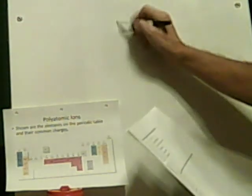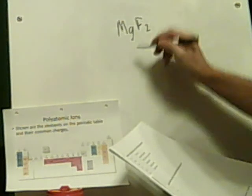Next one: MgF2 — magnesium fluoride. This is an ionic compound. Magnesium is plus 2, and each of the fluorines is a negative 1 — so it's just magnesium fluoride.